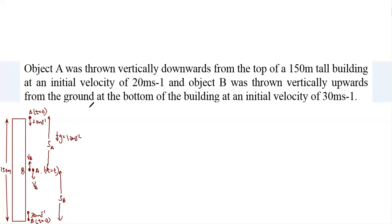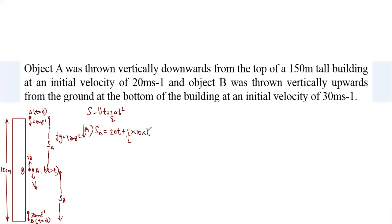The wisest thing to do is use the equation s = ut + ½at². I need sA and sB; when I add those two I will get 150. Let's apply the equation for A. Since A is going down, I'll apply the equation downwards, so sA equals initial velocity 20 times t plus half into 10 times t squared. So sA = 20t + 5t².